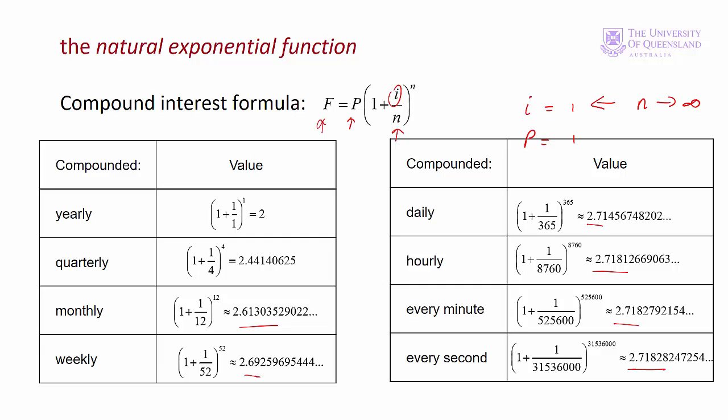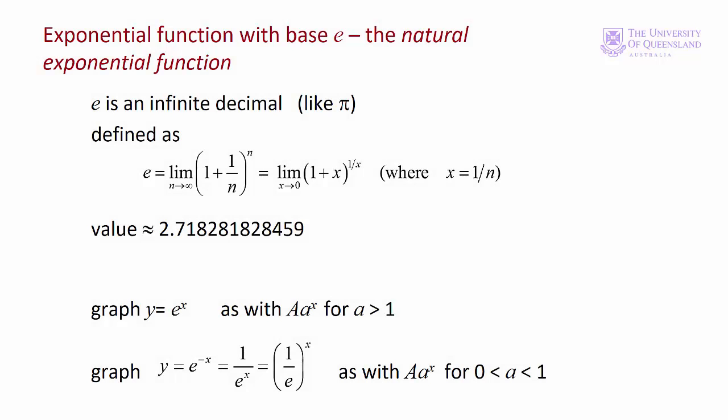Our formula then is converging and the number it converges to is e. In other words, the limit as n approaches infinity of 1 plus 1 on n to the power n is e. The graph of y equals e to the x is similar to y equals a to the x for the base greater than 1.